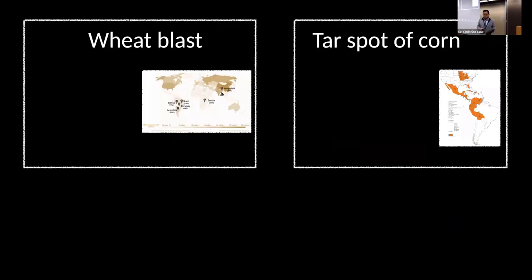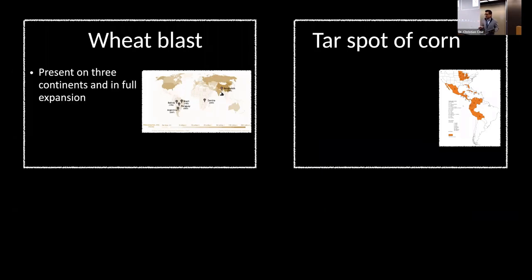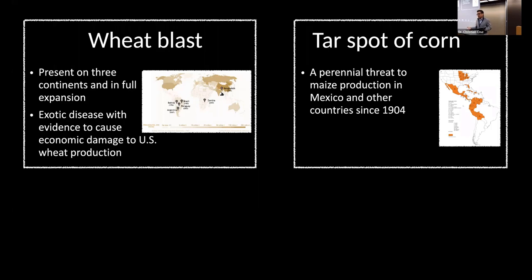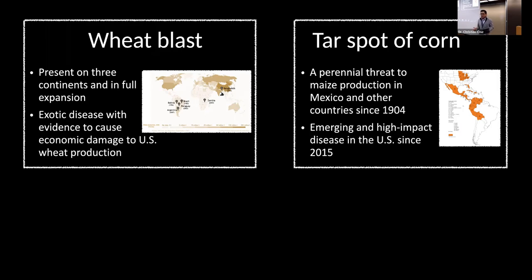Let's start talking in more detail about the two systems: wheat blast disease and tar spot of corn. Wheat blast, as I mentioned, is a relatively new disease now present in three continents. It is still exotic in the US — we haven't detected it here. But there is information telling us that environments in some parts of the US are conducive for the establishment and development of outbreaks. Tar spot is relatively new in the US but is a perennial threat in Mexico and other areas throughout the Americas. We have seen epidemics emerge in 2015, 2018, and 2021, and growers are very afraid of that disease.